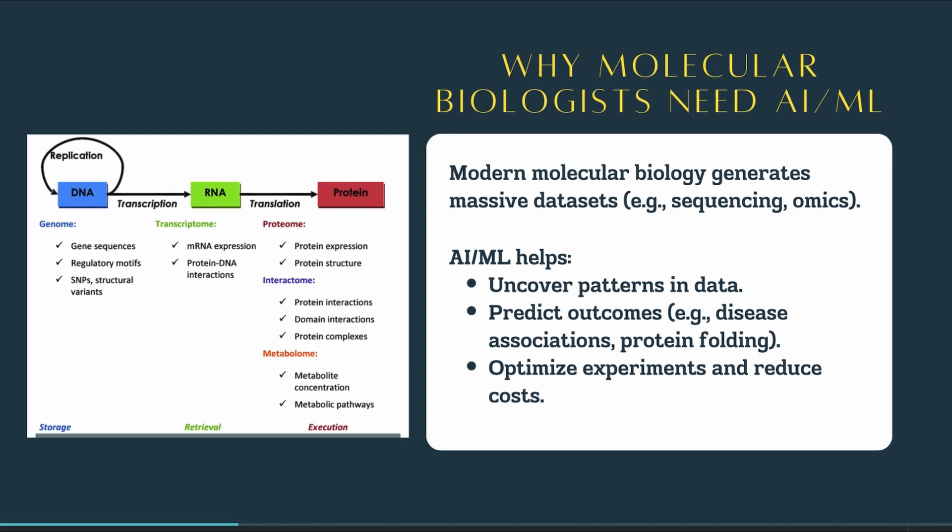AI and machine learning offer a solution. These technologies allow us to uncover patterns, make predictions, and optimize experimental workflows. For example, AI can predict disease outcomes from genetic data or suggest optimal experimental conditions for protein expression. By leveraging AI and ML, we can accelerate discovery, reduce costs, make more accurate predictions, and ultimately advance scientific understanding and improve human health.